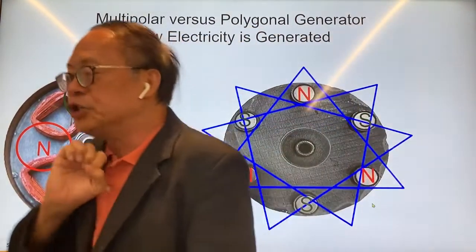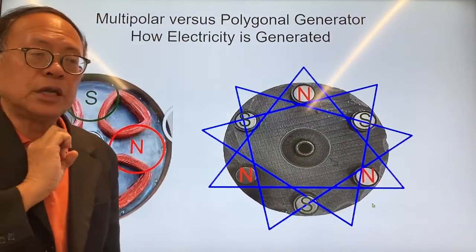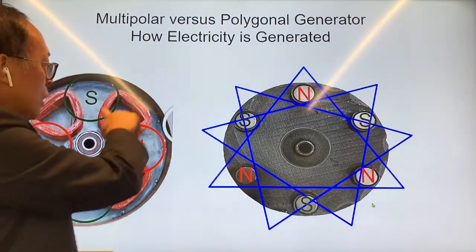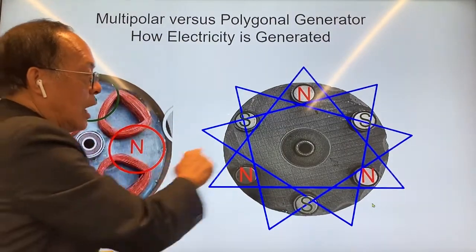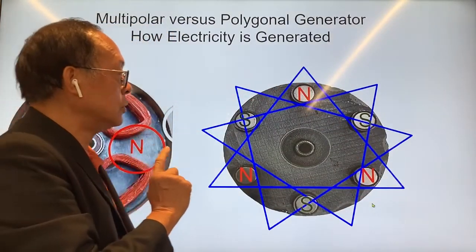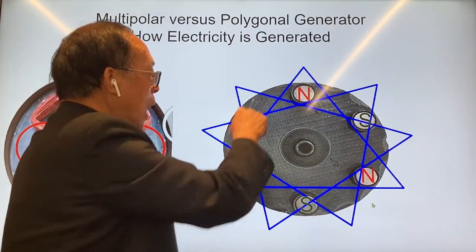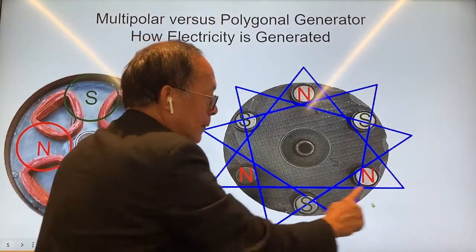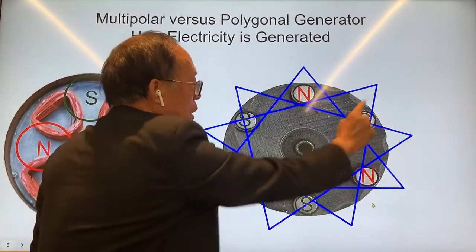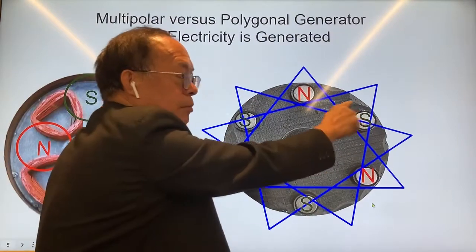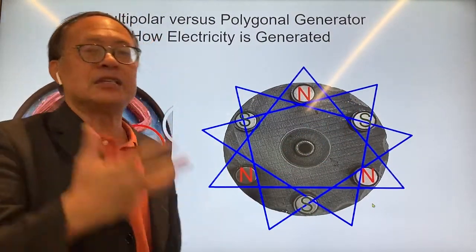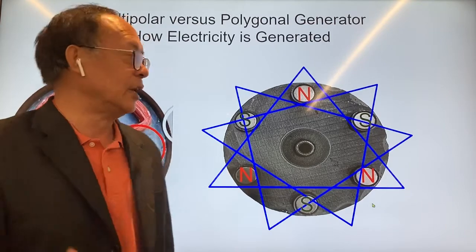The way I generate electricity, called a polygon electric generator, is very different. Instead of having coils, I have polygons — in this case, the polygon is a triangle — for which I have three triangles, one, two, and three, and each of them will be generating a phase of a three-phase alternating current.